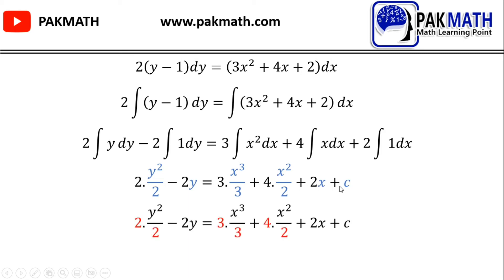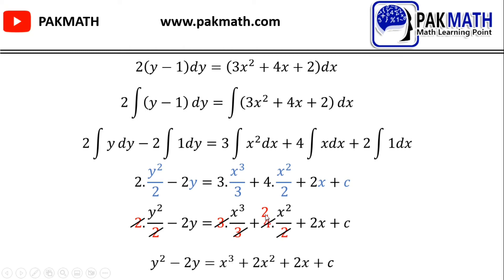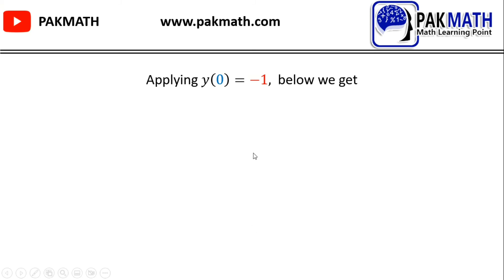Now we will simplify the equation. The 2s and 3s cancel, giving us the general solution: y² − 2y = x³ + 2x² + 2x + C. The given initial condition is y(0) = −1.